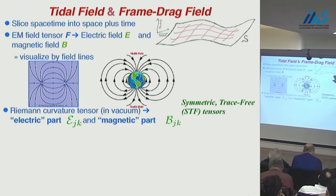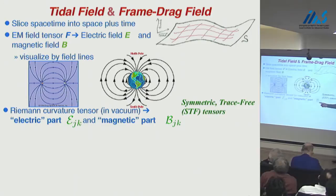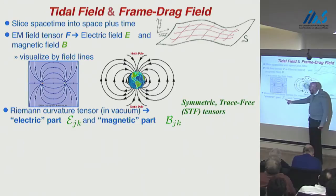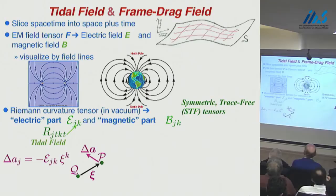Similarly, if we foliate space-time in this manner, the Riemann curvature tensor splits up into two irreducible tensorial parts, which are both symmetric trace-free tensors that live in the space slices. E_JK is the analog of the electric field; B_JK is the analog of the magnetic field. I prefer to call E_JK the tidal field, because it's the thing that produces tides on the Earth's oceans. And B_JK I like to call the frame-drag field, because it's associated with the dragging of inertial frames.